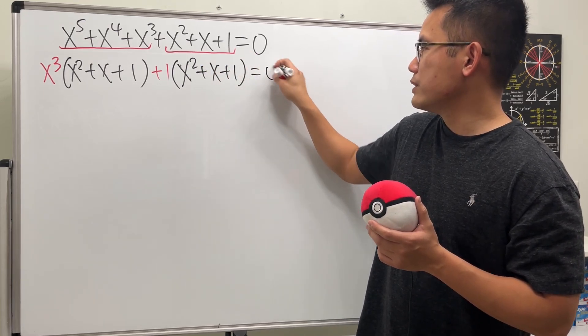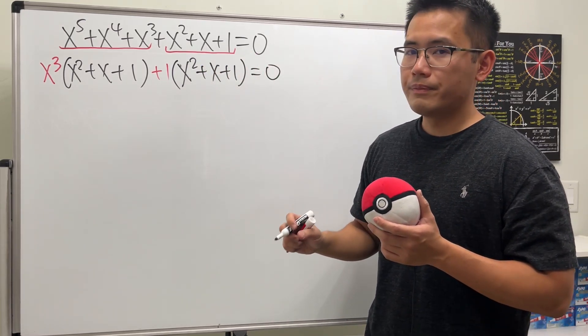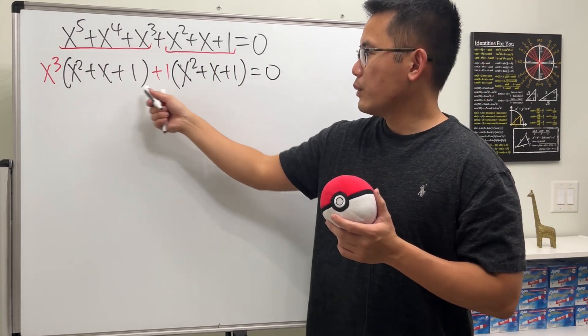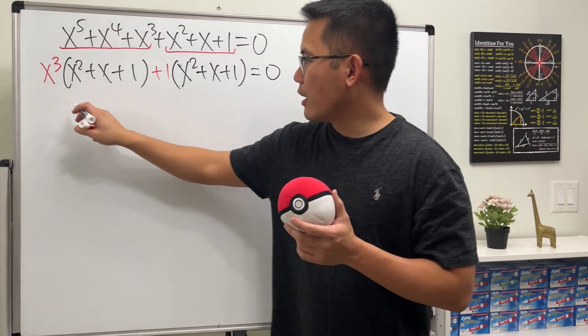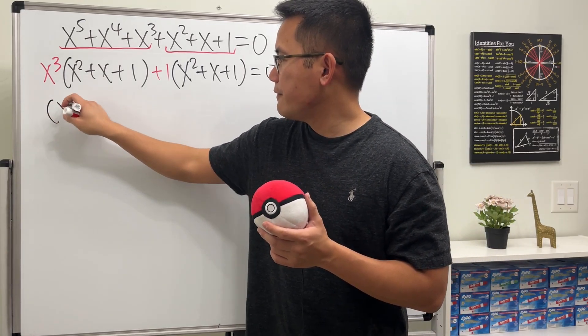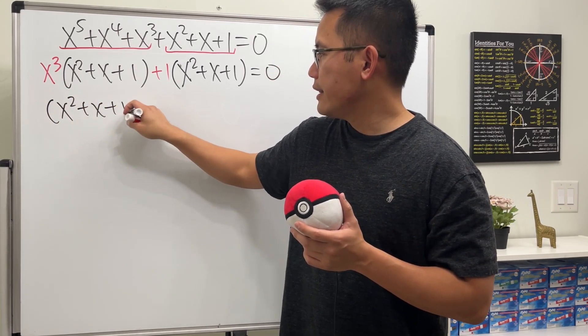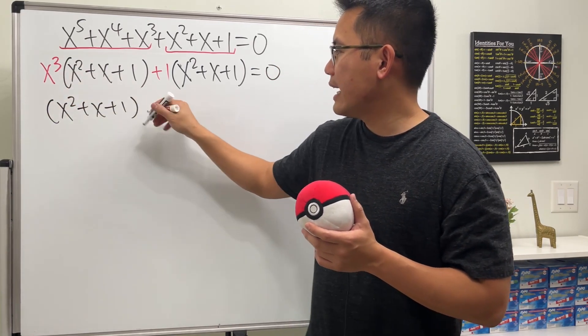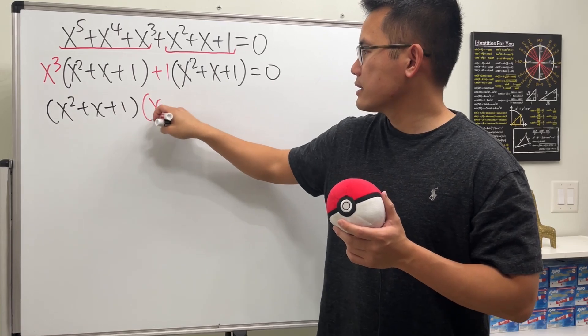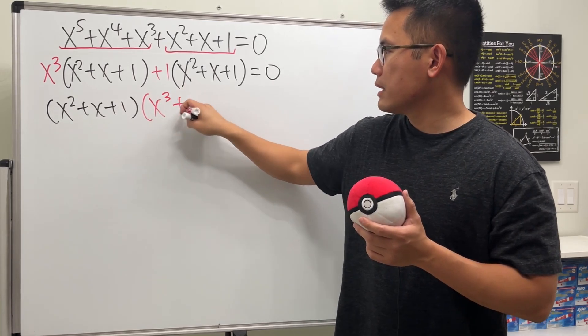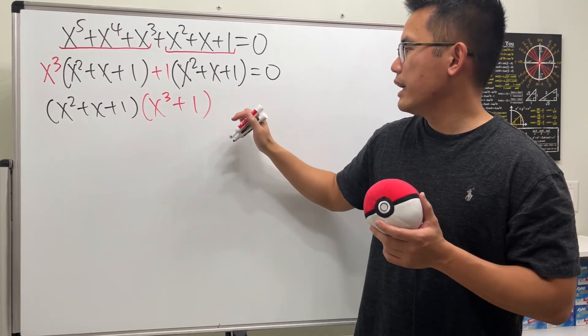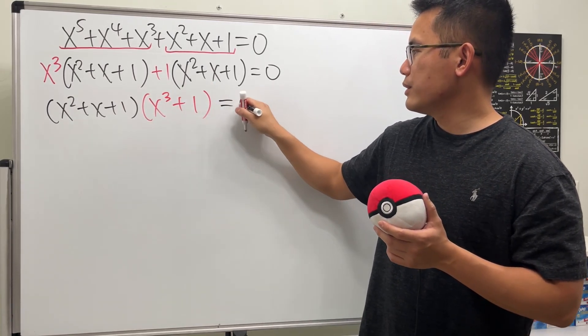We see that x squared plus x plus one is common in both groups, so we can factor that out. We are left with x cubed plus one, and the whole expression is still equal to zero.